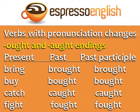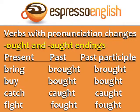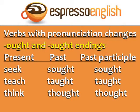Finally, we have the verbs with OUGHT endings in the past and past participle. This can be spelled OUGHT or AUGHT, but the pronunciation is the same: Bring, brought, brought. Buy, bought, bought. Catch, caught, caught. Fight, fought, fought. Seek, sought, sought. Teach, taught, taught. Think, thought, thought. Remember that the G is silent in these verbs.